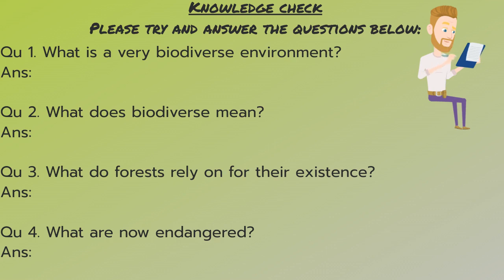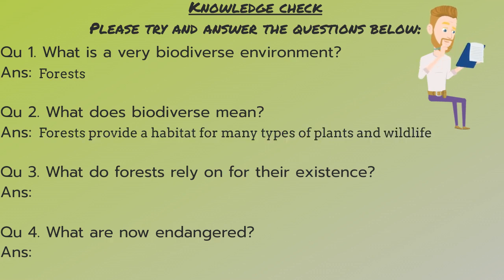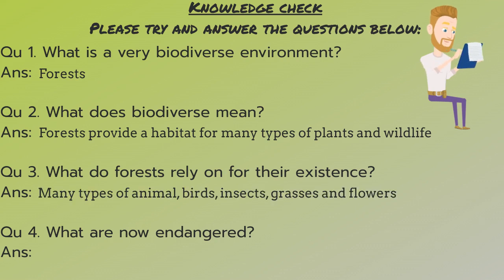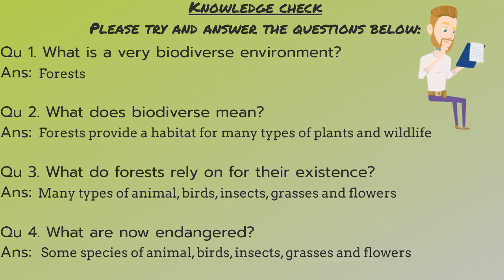Okay, so the answer to question one is forests. Question two, forests provide a habitat for many types of plants and wildlife. Number three, many types of animals, birds, insects, grasses and flowers. And number four, some species of animals, birds, insects, grasses and flowers.